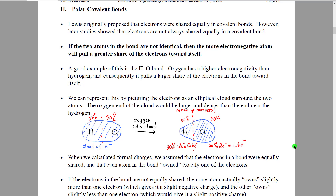We're now going to talk about polar covalent bonds. Polar covalent bonds is sort of a modification of Lewis's original picture of how bonding works. Lewis originally proposed that when a covalent bond was formed, the two atoms would get together and they would share their electrons equally — each atom would get an exact 50% share of the electrons.